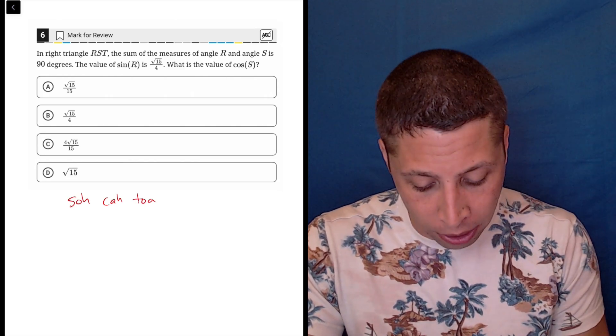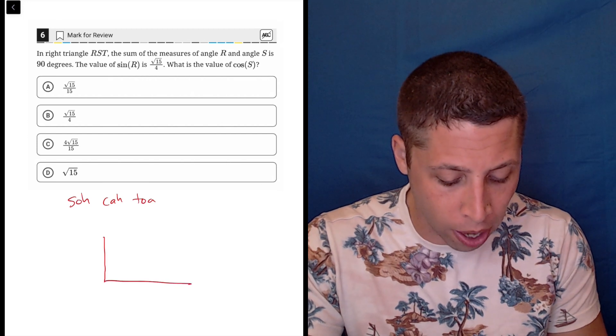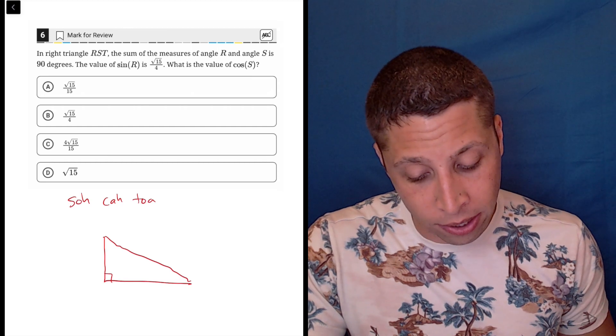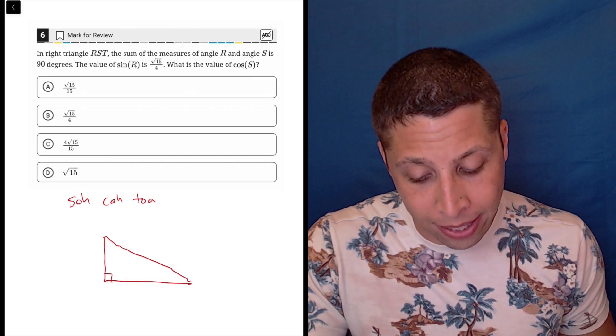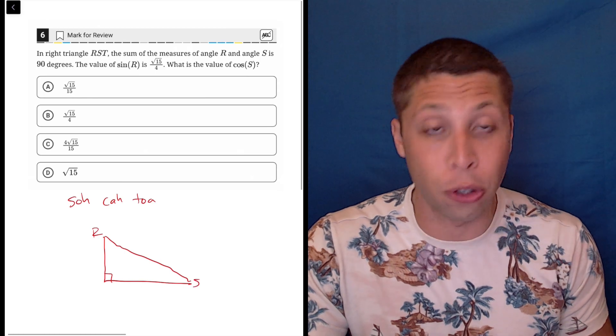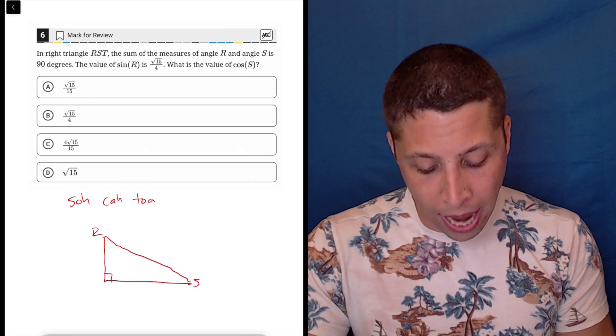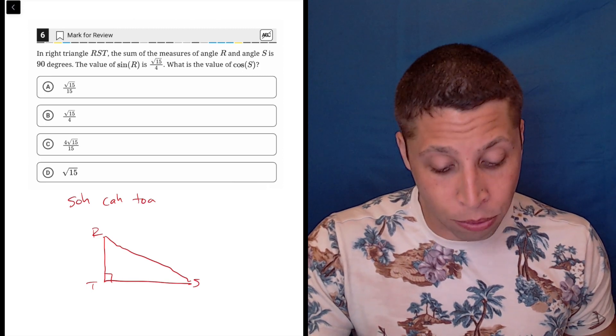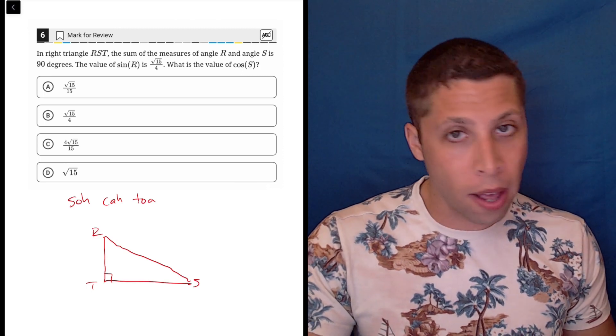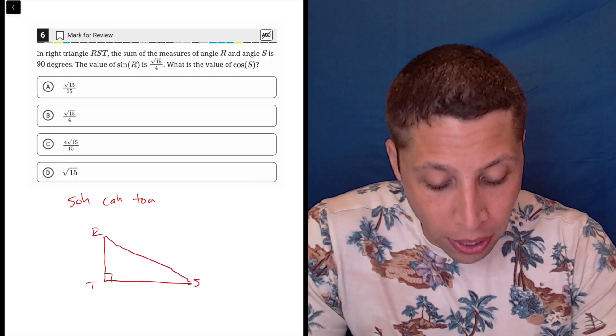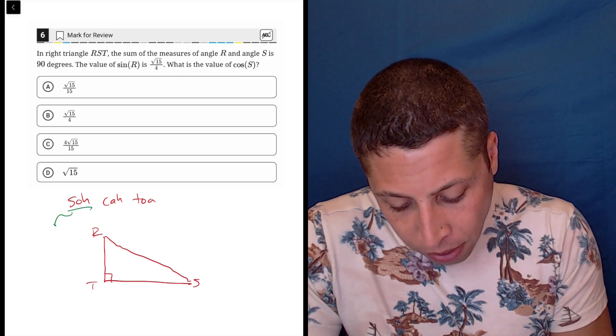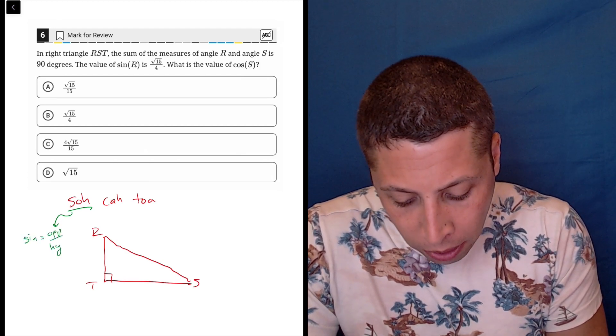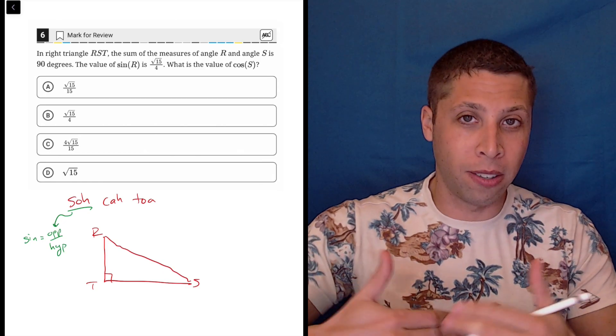How would it work? Well, SOHCAHTOA tells us sine, cosine, and tangent, so we need to have a triangle in order to do that. It needs to be a right triangle, and they tell us in RST that the sum of R and S is 90. So basically they're saying R and S are the two acute angles, and then T is our 90 degree angle. The value of sine of R is radical 15 over 4. So the way to think of this is remember that sine is going to be a fraction. Sine is equal to the opposite over the hypotenuse. That's what the SO means.